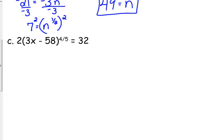And I'll give you a second to write it down because it is kind of a long equation. Two times, parentheses, 3x minus 58, close with parentheses, to be 4 over 5, to the fourth-fifth power is equal to 32. First things first. That 2 in front, first of all, does not get distributed inside the parentheses because exponents come before multiplication.